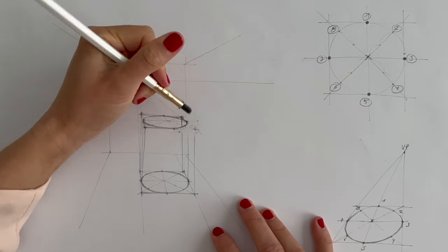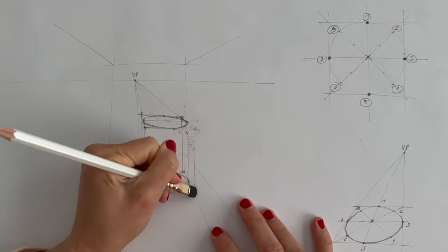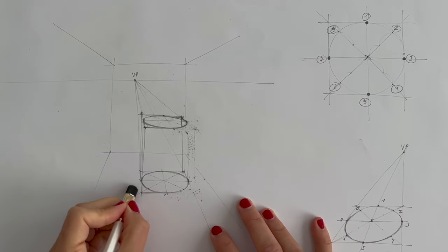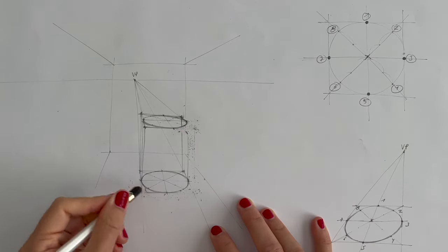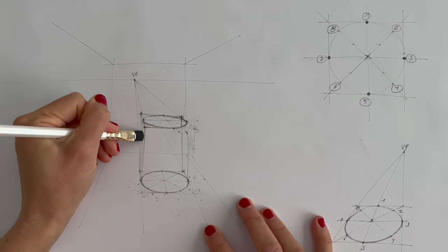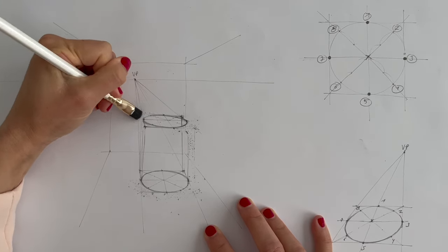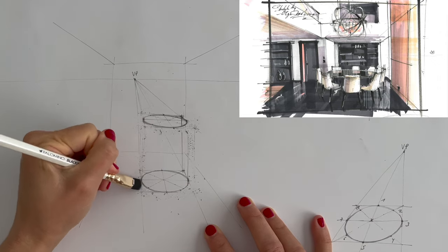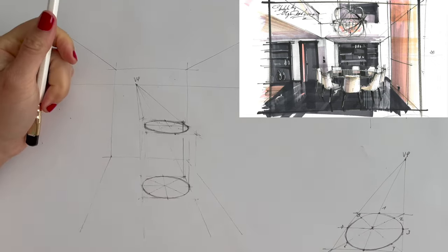So basically this cylinder, it could be anything. It could be a table, for example, in a room, a chair, right? Of course, if we draw with different scale, slightly smaller for a chair. Here you can see one of my interior sketches that I did using this knowledge.